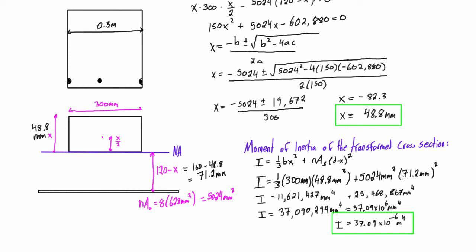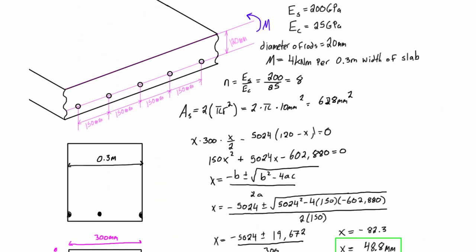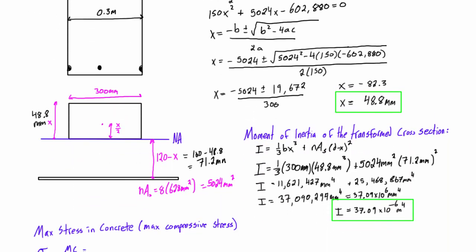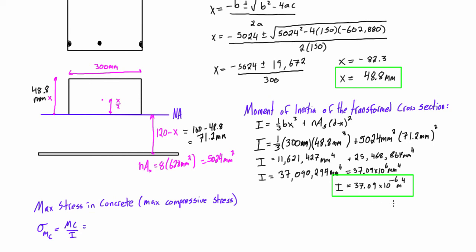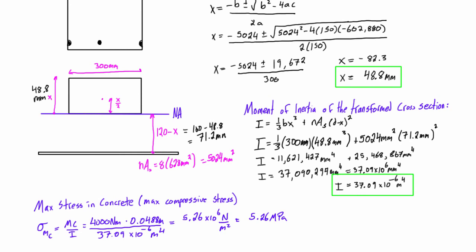Now we calculate the maximum stress in the concrete, which is the maximum compressive stress in the member. Using σ_max = Mc/I: M is 4 kilonewton meters, c is 48.8 millimeters (the extreme fiber distance for the compression zone), and I is 37.09×10⁻⁶ m⁴. This gives 5.26 megapascals — the max compressive stress.